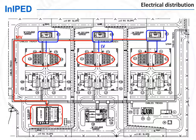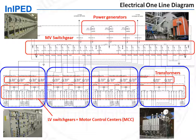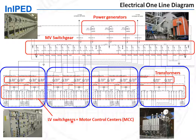This distribution is shown on the electrical single line diagram. The electrical single line diagram shows all the electrical equipment and their geographic location. It includes the power generators, which produce power in medium voltage, so they are connected with a medium voltage switchgear, typically 10 kV. Then the transformers from 10 kV to 400 volts, and then the low voltage switchgears or motor control centers. The electrical substations are also shown on the single line diagram.